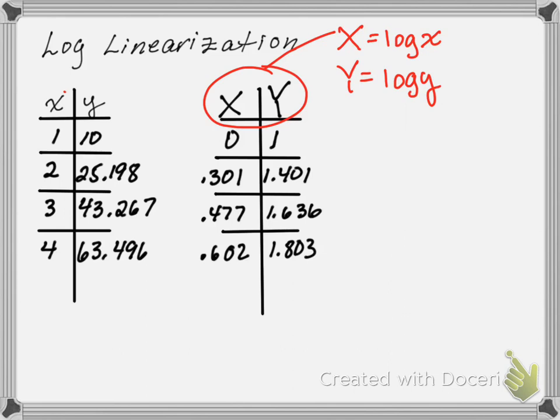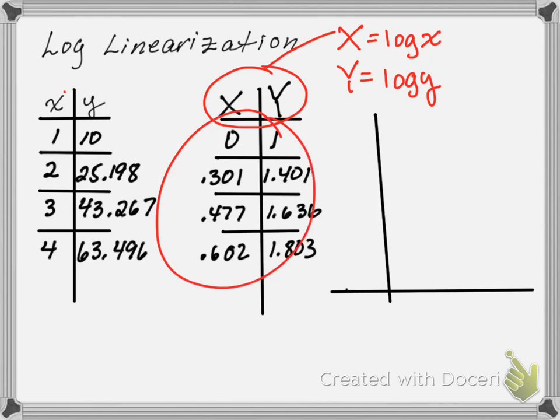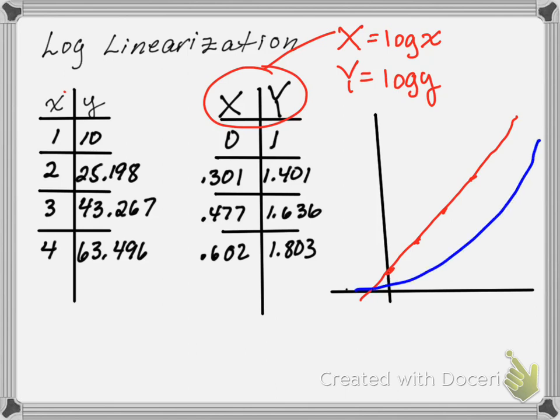Once we get this table of data, the idea is that when I log the data, if this logged data, if I were to graph it, it would come out to some straight line. I remember the first curve, I didn't know what the equation for that curve was, but this line I can find, I can find the equation of a line easily enough.